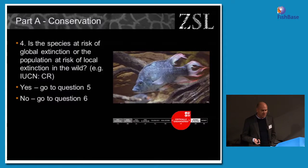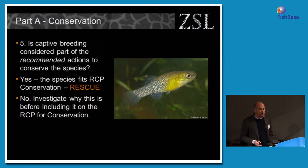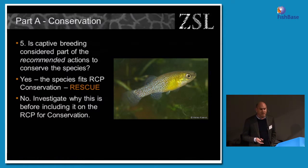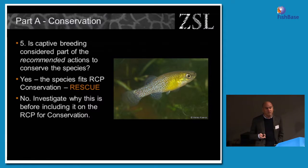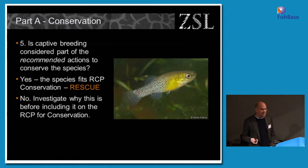Question four: is the species at risk of global extinction, or the population at risk of local extinction — in other words, critically endangered according to IUCN? This takes us down two paths. If yes, we go to question five: is captive breeding considered part of the recommended actions to conserve the species? If yes, it fits under the Rescue category. An example is an Aphanius species from Algeria — if you look at it on the IUCN Red List, it's probably extinct in the wild now, but part of its recommended conservation is to develop a captive breeding program. If the answer is no, we must investigate further, since the Red List is always playing catch-up as species status changes constantly.